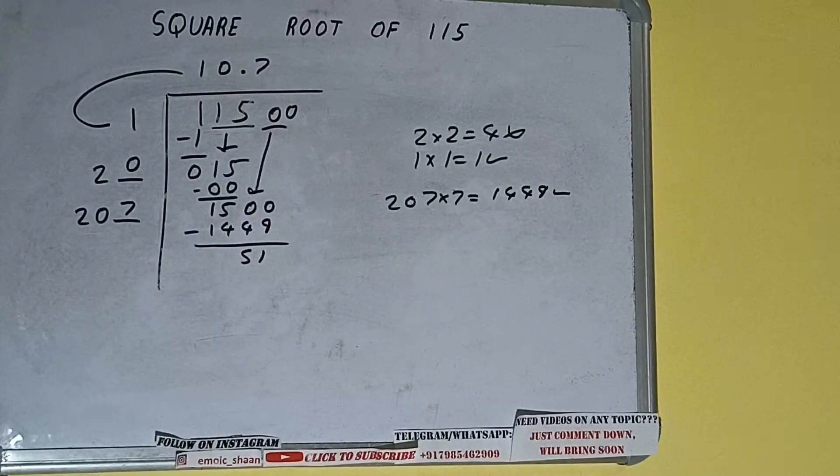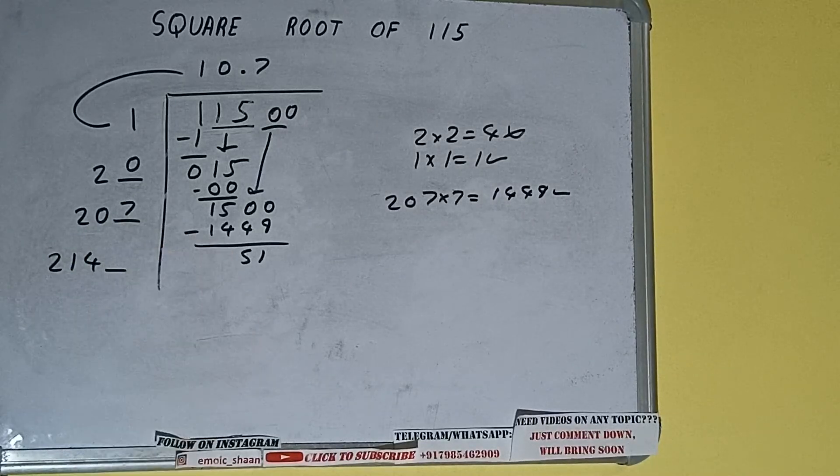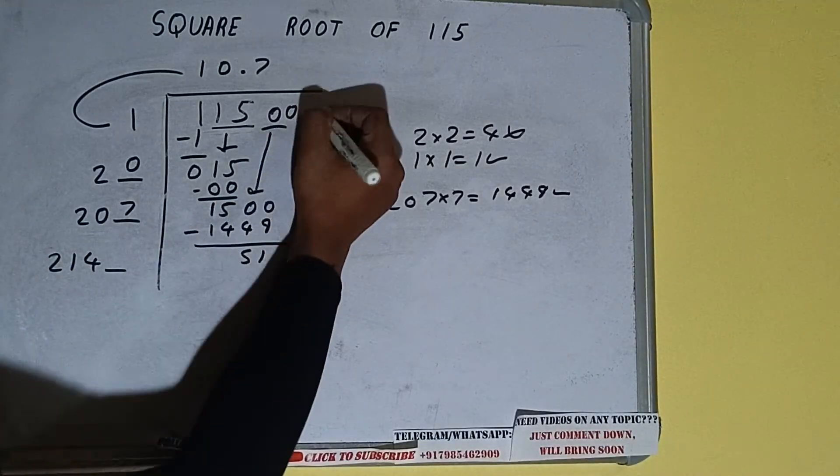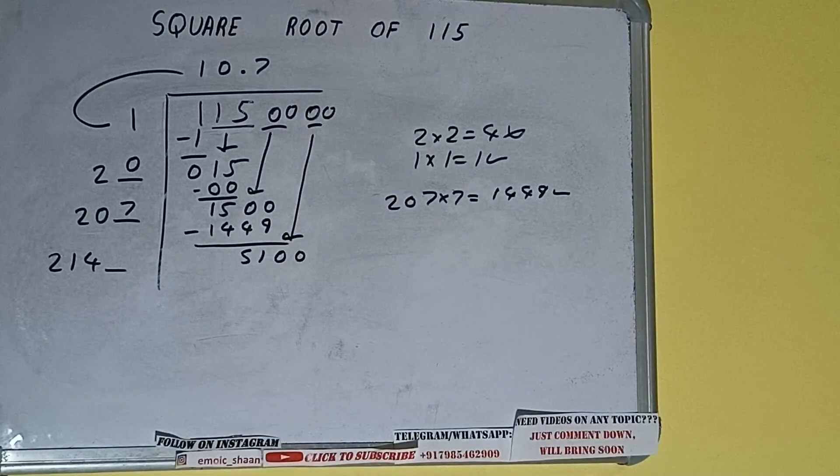Now 207 into 7 we did. So add both. So 207 plus 7 will be 214 and 1 digit extra. And this number we need to make it big. So bring the next pair of zeros down and it will be 1500.